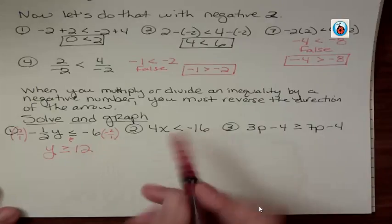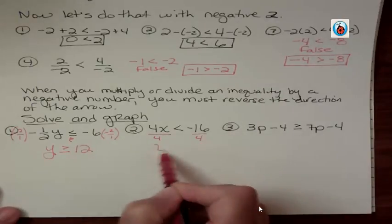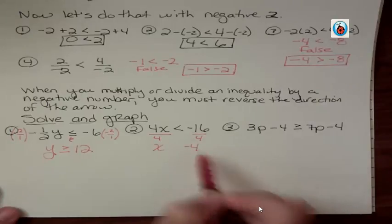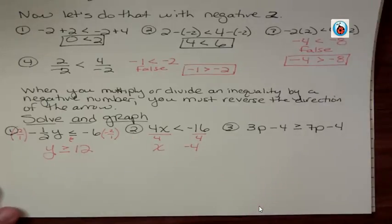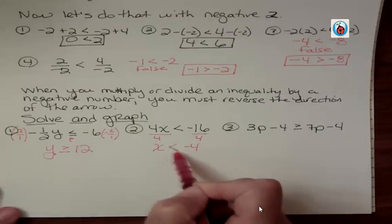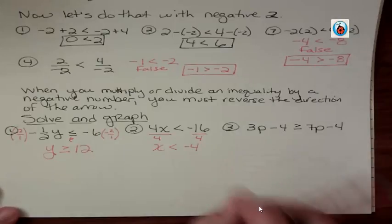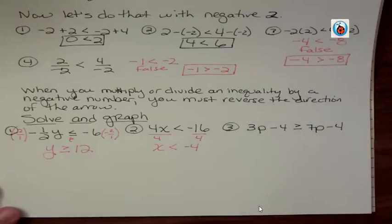What about this one? Well, this one has a positive coefficient. So if I divide by a positive 4, and I get negative 4, do I need to flip the arrow? I do not flip the arrow because I didn't divide by a negative. If you divide by a positive, we saw earlier in the video, it's fine. You don't change it. You only change it if you multiply by a negative or divide by a negative.